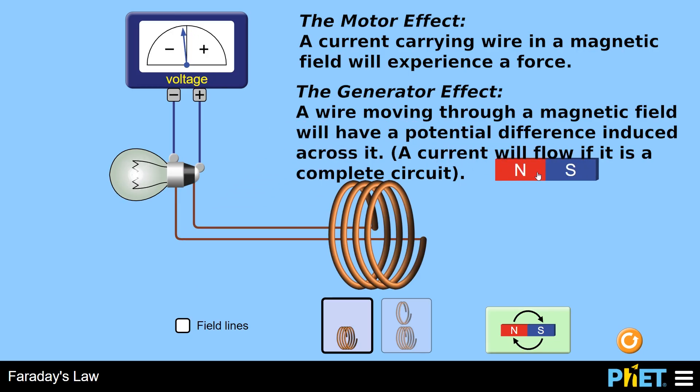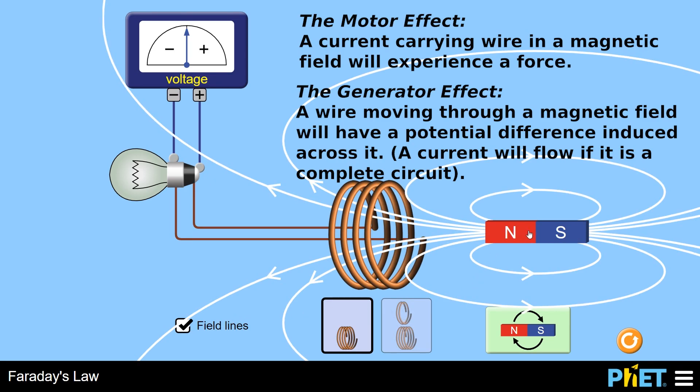So this is known as the generator effect, sometimes known as electromagnetic induction as well. And if I put the field lines on the magnet, you can see what's happening here.